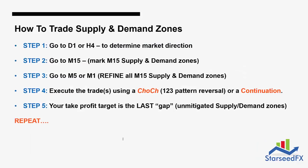Next — how to trade supply and demand zones. It is almost the same as trading the order block. Step one: go to daily or H4 to determine market direction. If you are a member of StarSeed FX, you receive order blocks from H4, D1, and weekly, so you already know whether the market has a probability to go higher or lower. If you want to do it yourself, go to daily or H4 for direction, then go to M15 to mark your supply or demand zone. You can go lower to M5 or M1 to refine the zone.